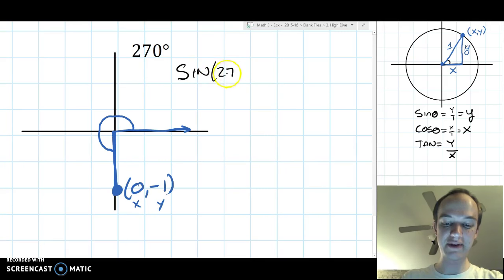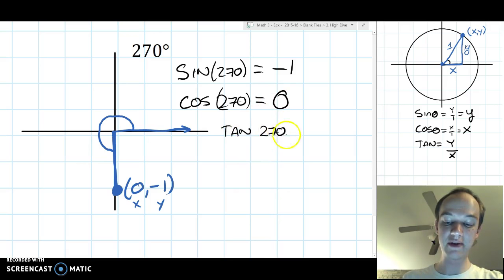Sine of 270 equals the y coordinate, negative 1. Cosine of 270 is the x coordinate. That's going to be 0. And tangent of 270 is going to be undefined.